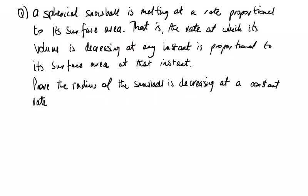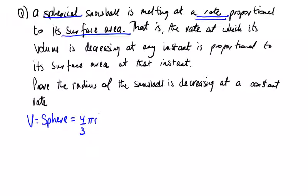This is a spherical snowball question — it's melting at a rate proportional to its surface area, so we're looking at a chain rule problem. The volume of a sphere is V = (4/3)πr³, so dV/dr = 4πr², which is also its surface area.